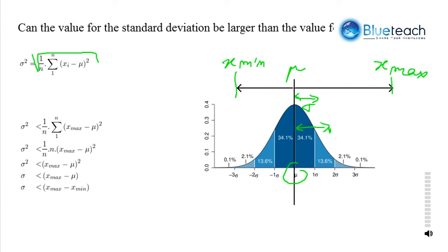So, let's see what happens when we want to include the range in that formula. Here, what we have represented is an x max that is more distant to mu than x min.